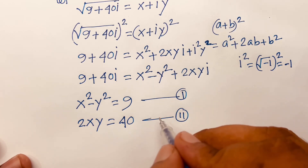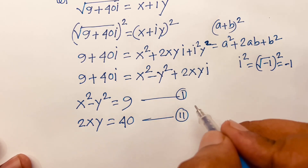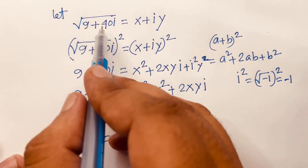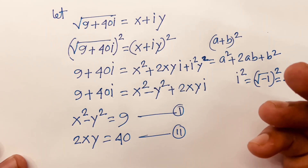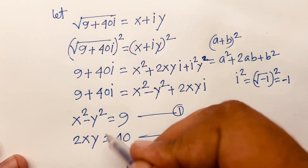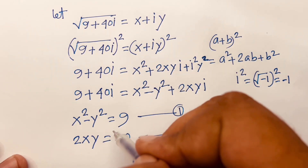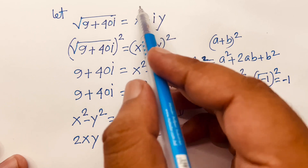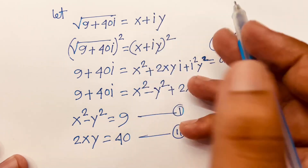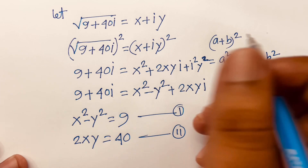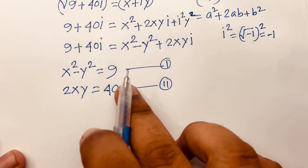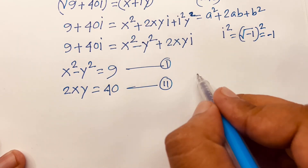Now we will find out the value of x and y. Because we know that √(9 + 40i) = x + iy, we will find out the value of x and y, and then put those values in to find our final answer. Let's start — I will find x and y using two methods.